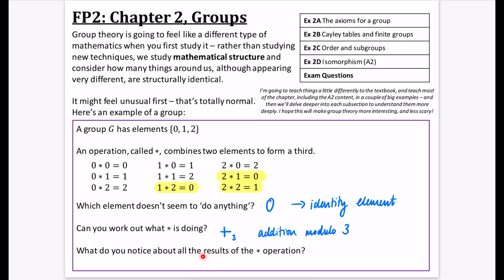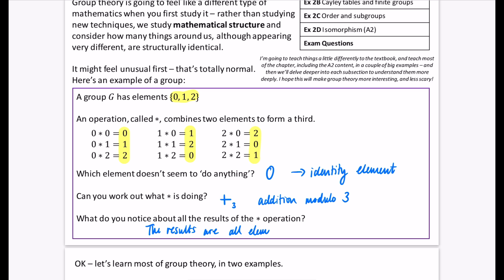And then my last question is, what do you notice about all of the results of the binary operation? I'm hoping what we've noticed about all of the results of this star operation, the results of all these parts that I've highlighted in yellow, they are all originally things that are inside the group. The results are all elements in the group.